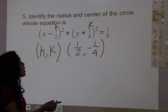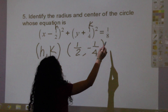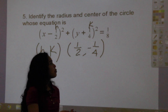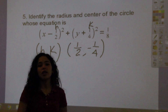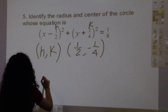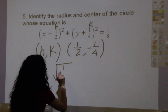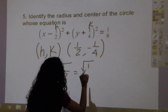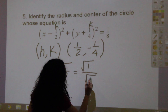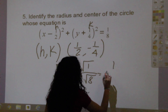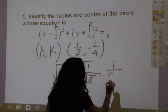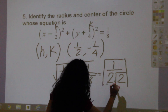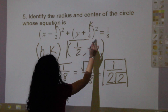Now for the radius — how do we find the radius? Remember that this number right here is a square, so the reverse of a square is finding the root. So the root of 1/8, also written as root of 1 over root of 8, equals 1 over 2 root of 2. And that should be your radius, and this is your center.